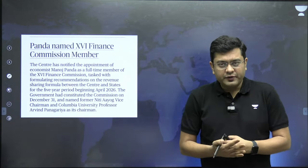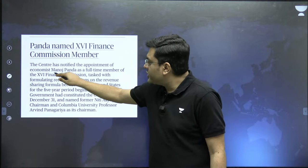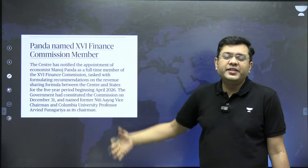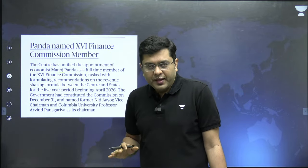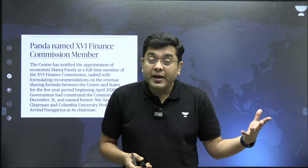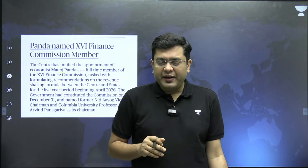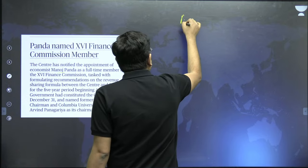Finally, economist Manoj Panda has been declared as the newest member of the 16th Finance Commission, to be headed by Arvind Panagariya. The 16th Finance Commission will decide upon a host of contentious factors — including the amount of money southern states believe they deserve versus what they receive, and the allocation formula based on population, which has generated grievances from states performing well on population parameters. These multiple contentious issues must be resolved, and the Finance Commission's legitimacy is given by Article 280 of the Constitution.